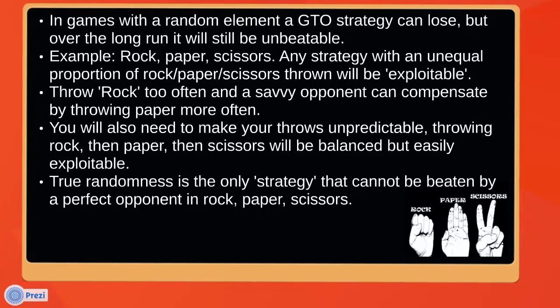In games with a random element, your GTO strategy can obviously lose. Any strategy with a random element — even if it's just getting aces in against 7-2 offsuit — you can lose. But over the long run, the GTO strategy will still be unbeatable.